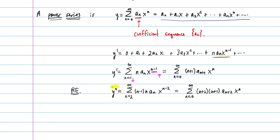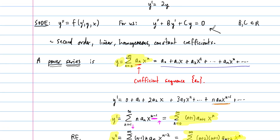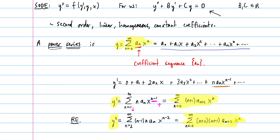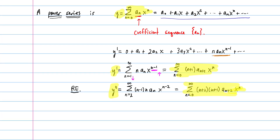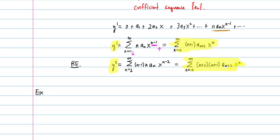So we have power series representations for our function and its derivatives. The idea now, in the context of recurrence relations and solving the differential equation, is to plug these power series representations into the differential equation. I have examples in the slides following this video for both a first order case and the second order linear constant coefficient homogeneous case. Let's go back to the example: Y double prime plus B times Y prime plus C times Y equals 0, and plug in the formulas.